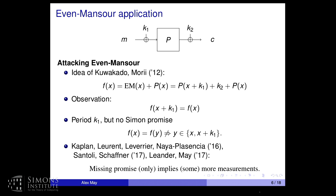The Even-Mansour construction is not a two-to-one function and is not periodic, but we can easily make it periodic. We take the EM construction — XOR with k1, apply the permutation, then XOR k2 — and then add px. This construction has a symmetry: if you evaluate at the point x plus k1, the two terms swap and you get a period. However, there is no two-to-one promise. There could be more collisions, but a series of papers showed that the extra collisions do not really hurt — we can still apply Simon's algorithm, at the cost of just a few more measurements.